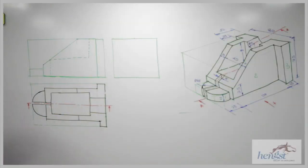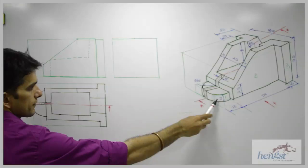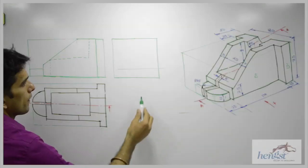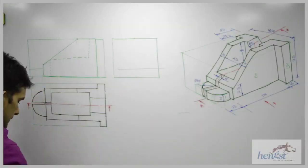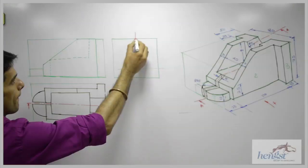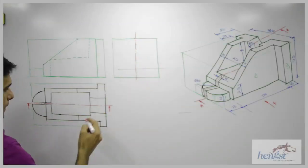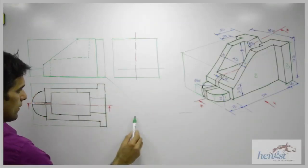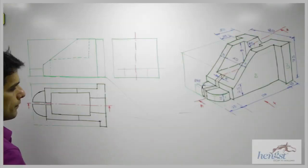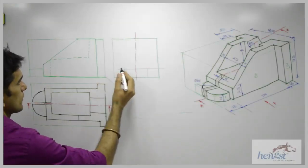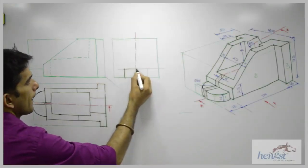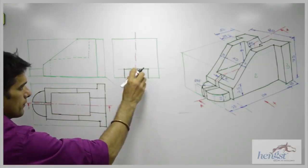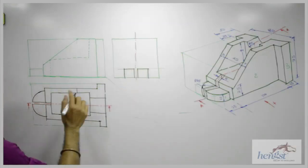We have done the top view, now we will see the side view. When you see from the side, you will see this part first — a rectangle. So I can project that, and the width is 50. So I can draw the center line and take projections from here and from there as well, and then project out. So it will be like this. And we will have this slot.